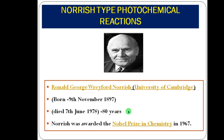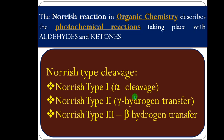Now we can view the eminent personality who shared his Nobel Prize in 1967 for his great achievement in Norrish type photochemical reactions - that is Norrish type 1, type 2, and type 3. The person is Ronald George Wreyford Norrish from the University of Cambridge. Norrish type cleavages have three possibilities: type 1 is alpha cleavage, type 2 is gamma hydrogen transfer, and type 3 is beta hydrogen transfer. These reactions happen only in carbonyl compounds, that is aldehydes and ketones.